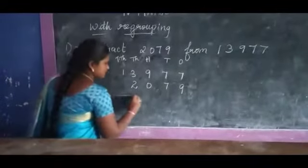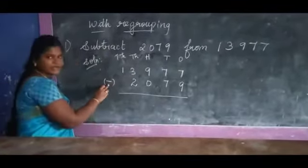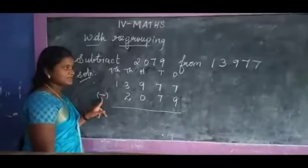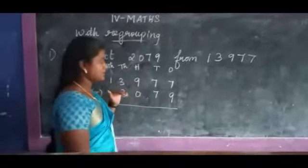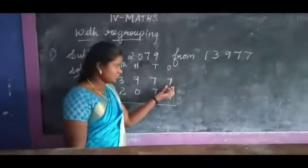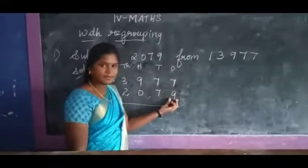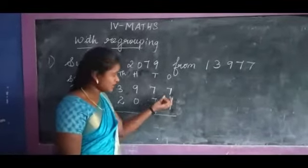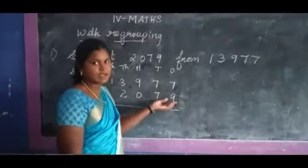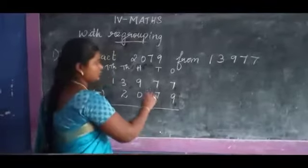Next, it is important: you have to put a subtraction sign — subtraction sign is compulsory. Next you have to subtract. First number: 7, 9 subtract. So 7 is smaller than compared with 9, so you have to borrow.